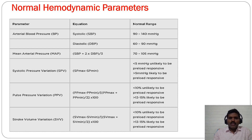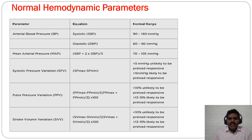Systolic pressure variation: a maximum-to-minimum difference of less than 5 mmHg suggests the patient is unlikely to be preload-responsive; greater than 5 mmHg suggests likely preload responsiveness. Pulse pressure variation (PPV) is calculated as: (PP_max − PP_min) / ((PP_max + PP_min)/2) × 100. Less than 10% indicates non-responsiveness; 10–15% or more indicates likely fluid responsiveness. Stroke volume variation (SVV) uses the same formula with stroke volume values: less than 10% unlikely fluid-responsive, more than 13–15% likely preload-responsive.